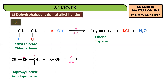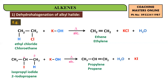Removing H from the beta carbon: H and OH of KOH give water; iodine and K combine to give KI. What you get is CH3-CH=CH2 — the corresponding alkene, which is propylene or propene.